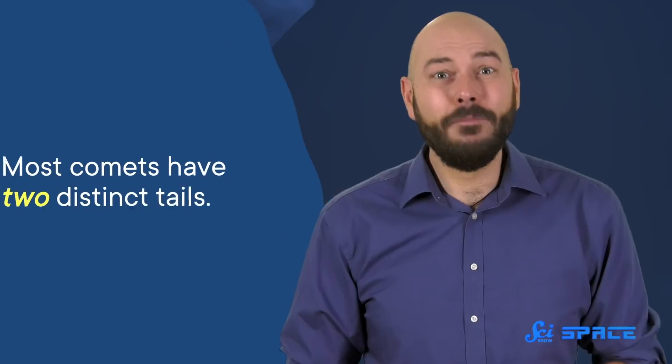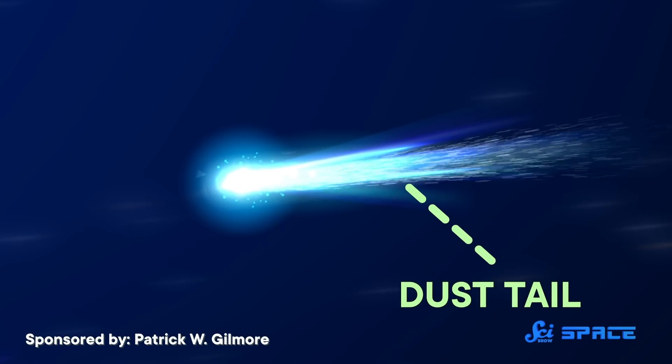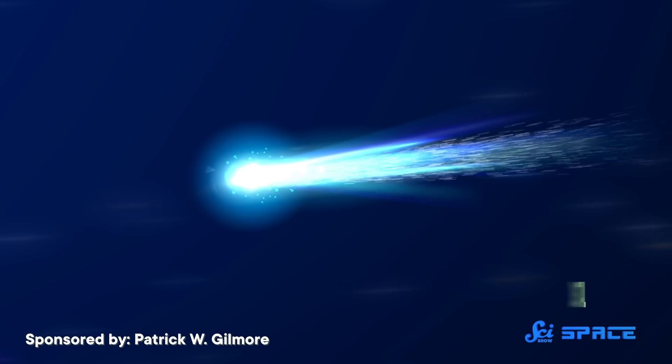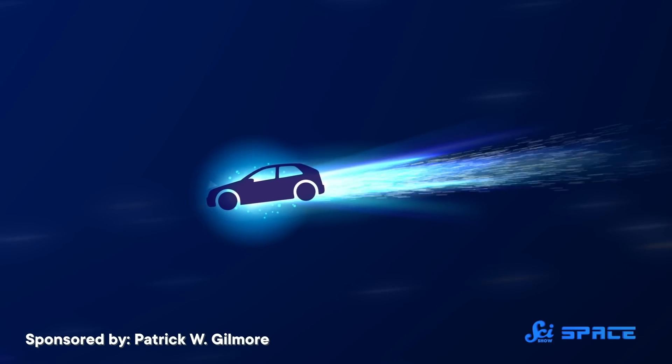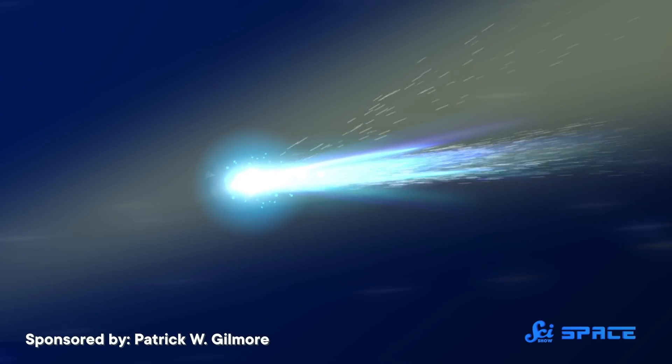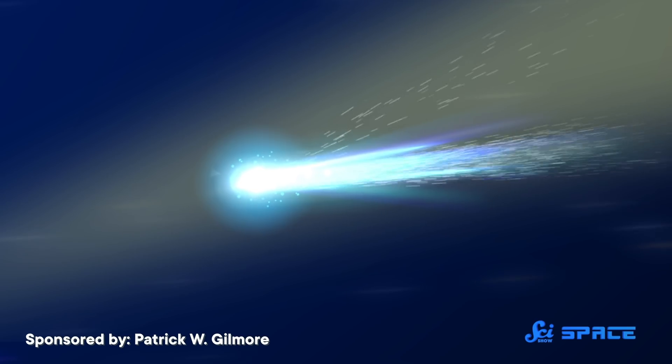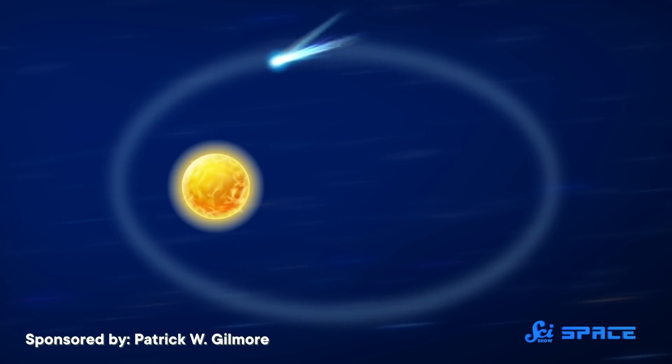Then there are the tails. Most comets have two distinct tails. The dust tail consists of bits of the coma that have drifted away as the comet hurtles through space, kind of like the dust behind a car as it drives down a dirt road. But when the sun's ultraviolet light hits particles in those bits of coma, it can knock some of their electrons off, forming electrically charged ions. This creates the ion tail. And because it interacts with the sun's powerful solar wind, the ion tail always points directly away from the sun, regardless of which way the comet is moving.